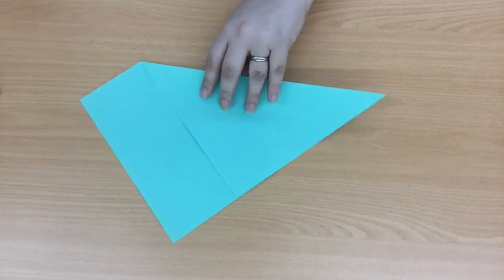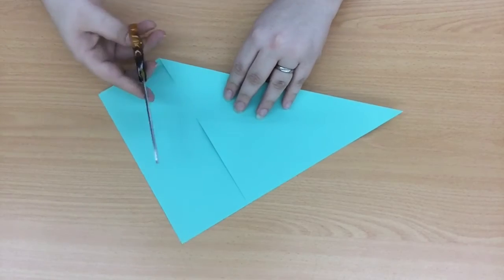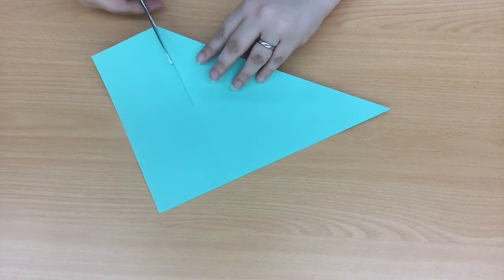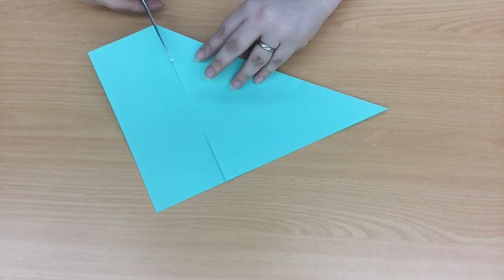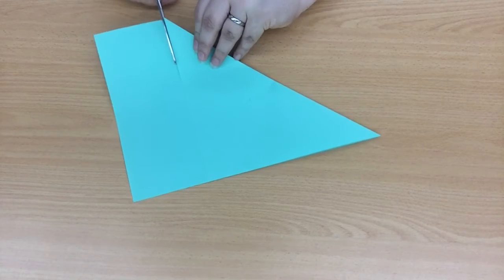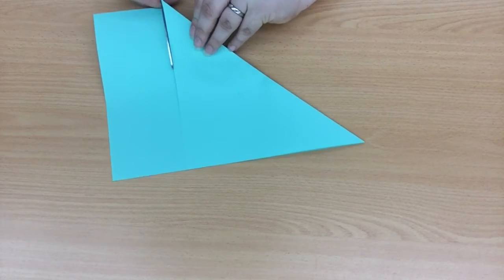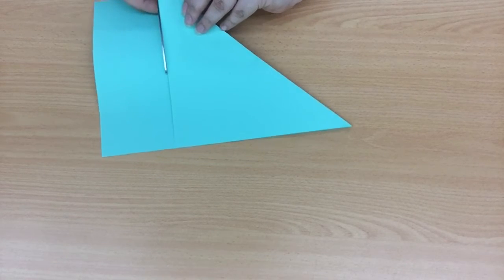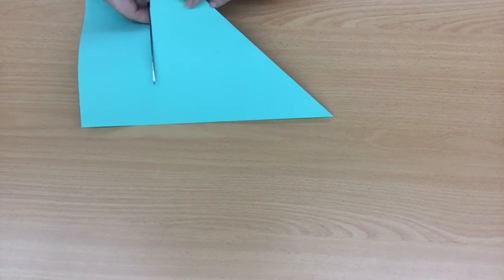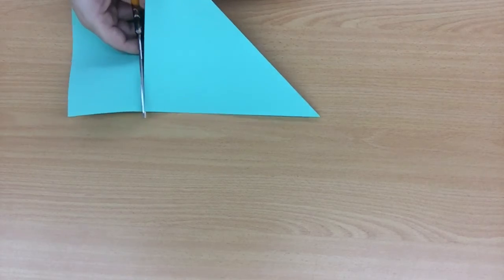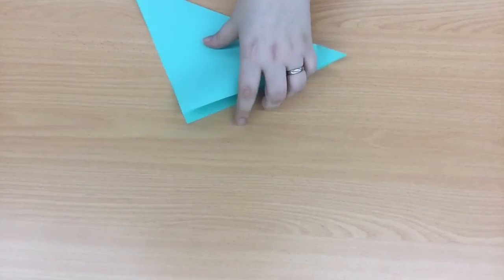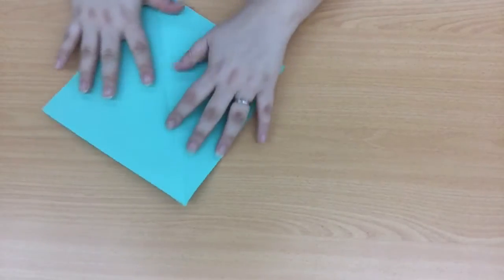Take your scissors and cut along the area that isn't included in your triangle. If you unfold your triangle you'll now have a square.